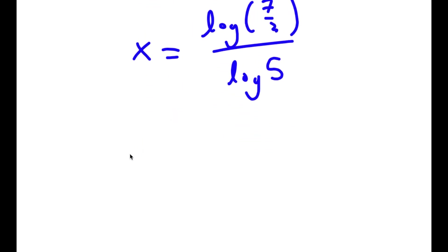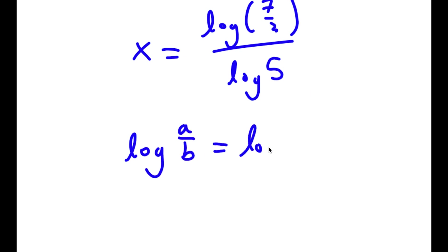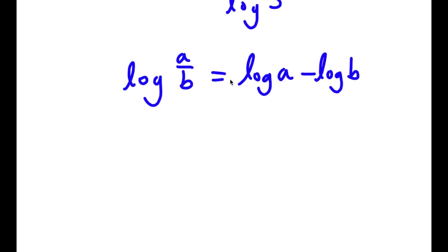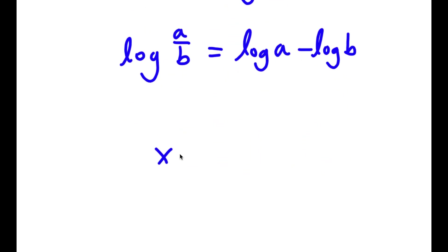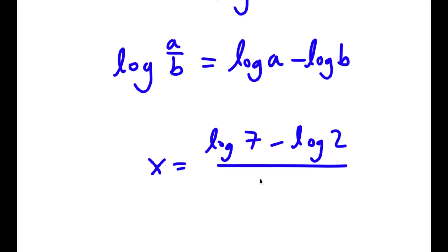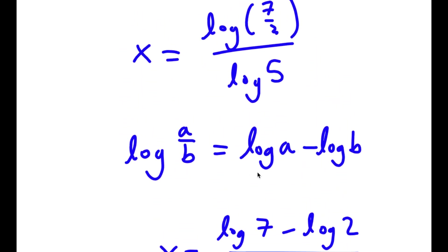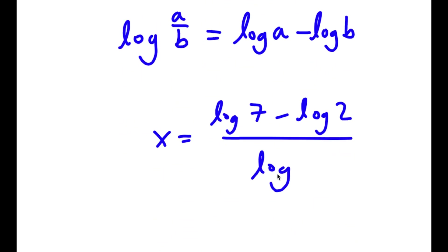Now if I have something in the form log of a over b, this is equal to log a minus log b. So in this case, log 7 over 2 is going to equal log 7 minus log 2, and I have this over log 5.